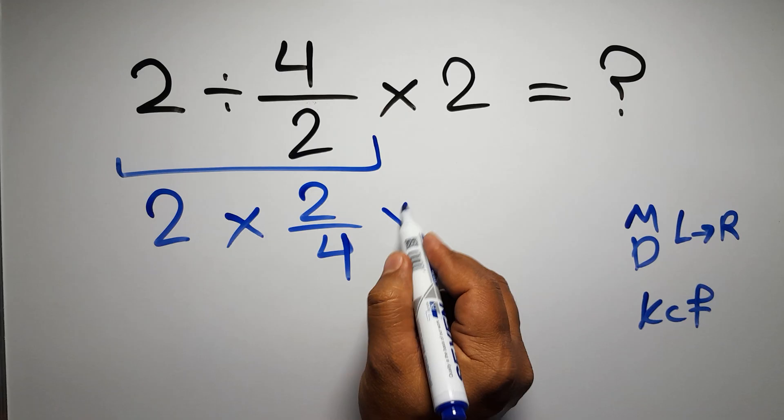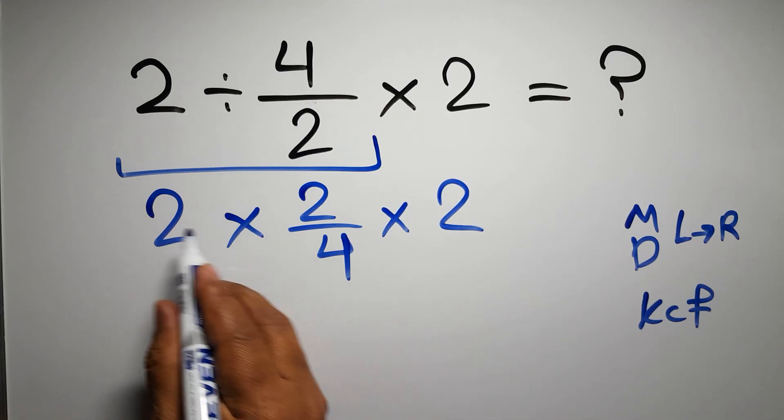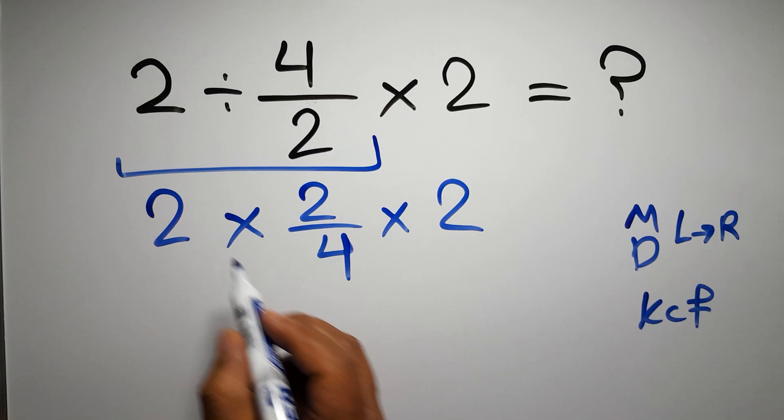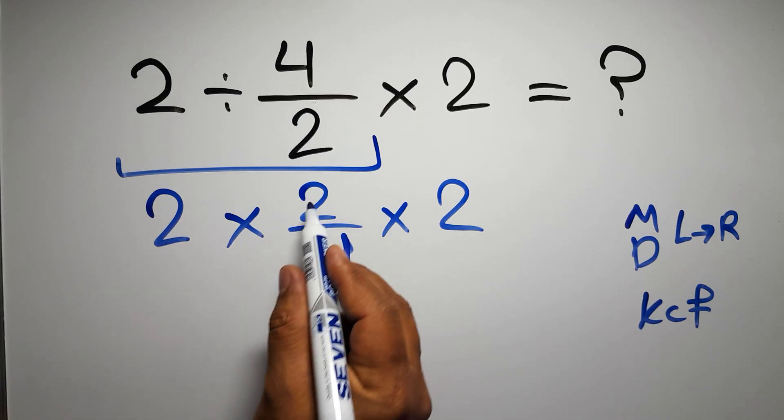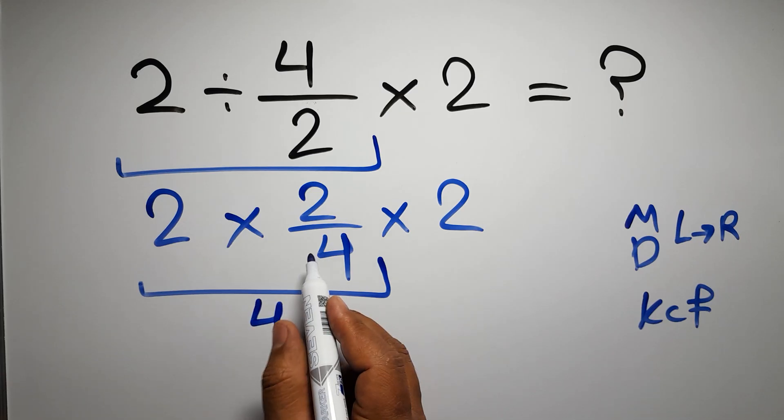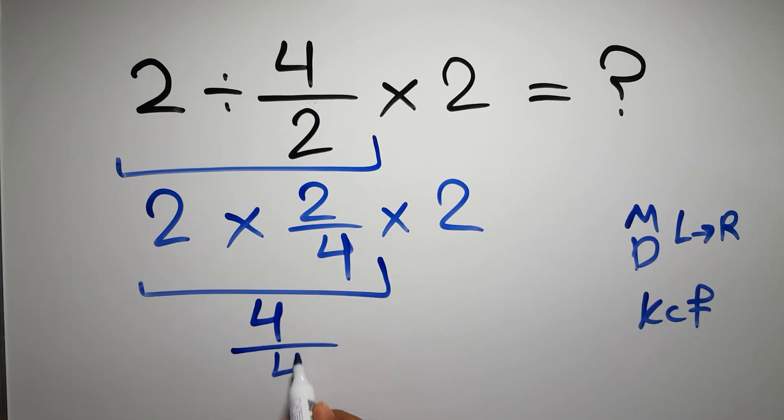And here we have times 2. 2 times 2 over 4 times 2. First, this multiplication: 2 times 2 over 4 equals 2 times 2 gives us 4. 4 over 4. Then times 2.